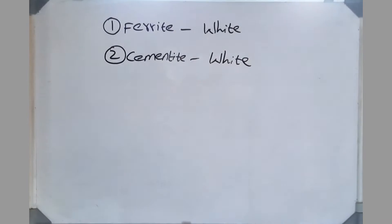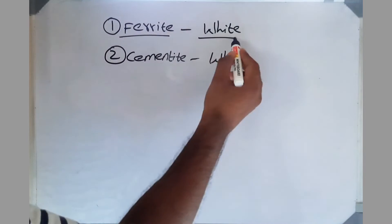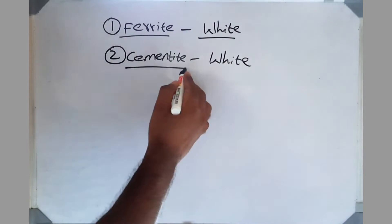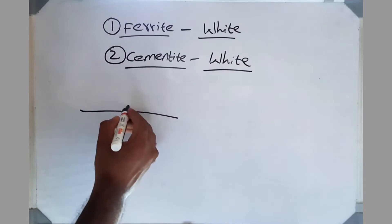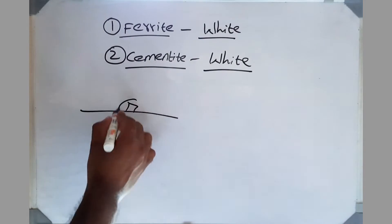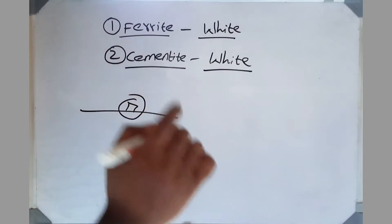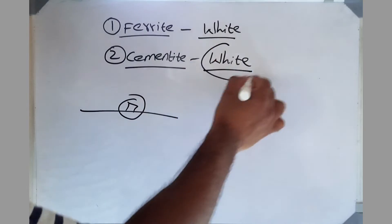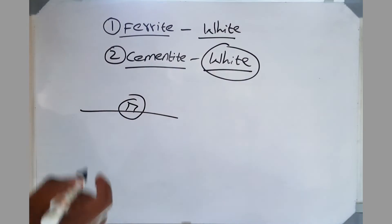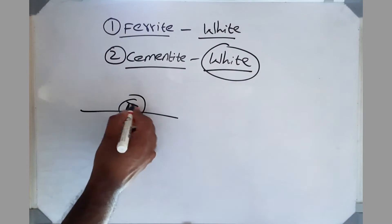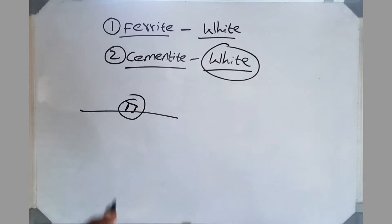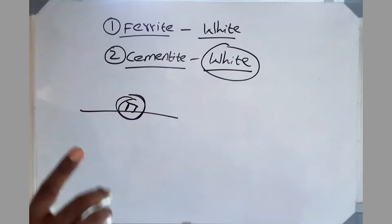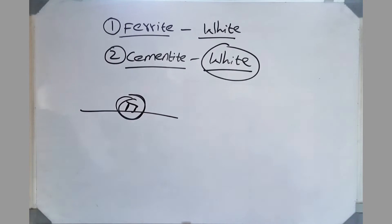It is important to understand: if you etch ferrite alone it appears white, and if you etch cementite alone it also appears white. However, because cementite forms rods that are hard and are not removed during grinding and polishing, they stand proud of the surface and create shadows — making those areas appear darker. In white cast iron where cementite is the matrix, cementite actually looks white. The apparent color depends entirely on how light is reflected from the sample surface.